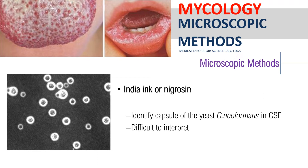Take note that other references do not use 10% KOH — they use deionized water instead. So if it appears on the exam or board exam and 10% KOH is not an option, the answer is deionized water. Under the microscope, the India ink stain is used for easy visualization of the capsule of Cryptococcus neoformans in your CSF sample. The particles of the ink pigment do not enter the capsule that surrounds the spherical yeast cell, resulting in a zone of clearance or halo. This allows for quick and easy identification of Cryptococcus neoformans. However, the disadvantage of this method is that it is very difficult to interpret.